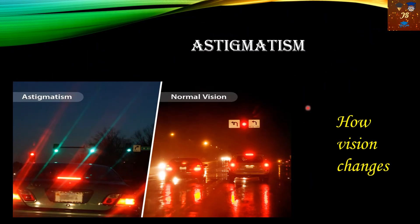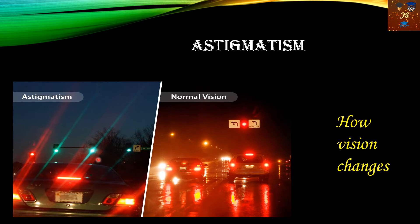First of all, let us see how vision changes in the case of an astigmatism patient. This is a normal vision — with a normal eye we can clearly see a rainy road with cars and lights. But in the case of an astigmatic eye, those lights which are very clear in normal vision are all distorted and blurry in appearance. This is the vision of an astigmatic eye, which is just opposite to that of normal vision.